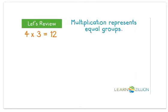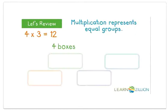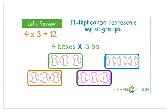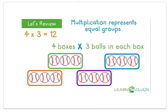For example, four times three equals twelve could be four boxes with three softballs in each box. That would be twelve softballs.